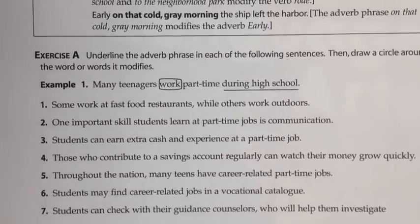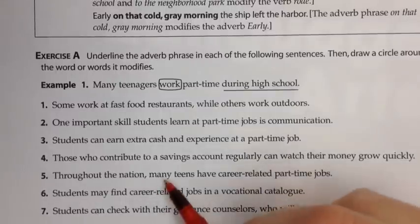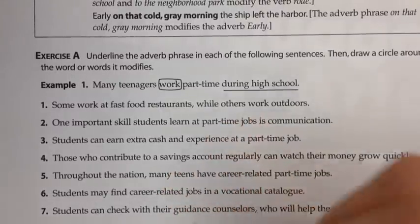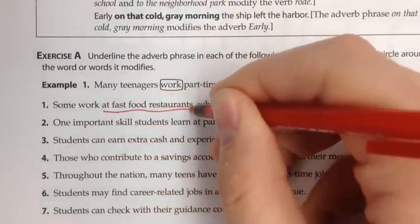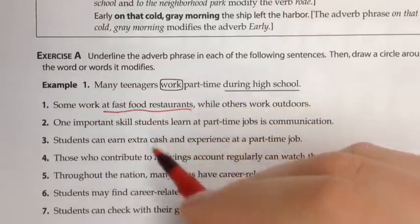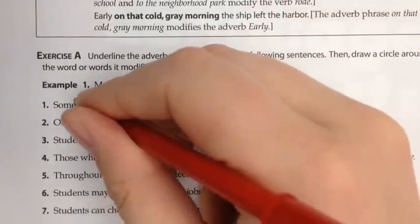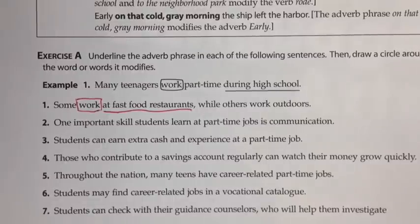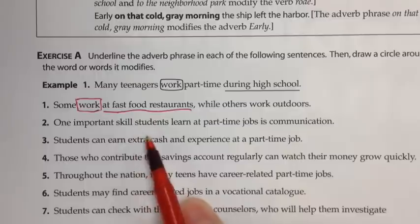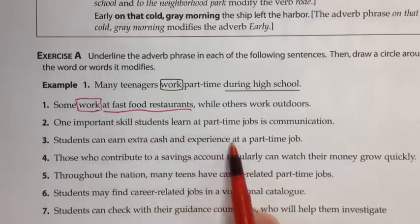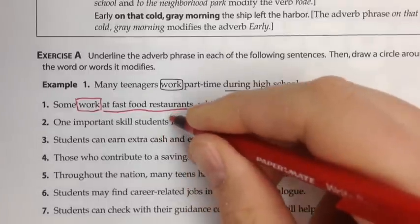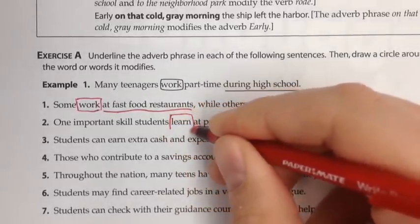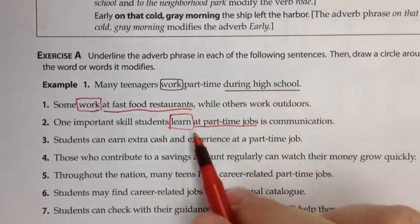Number one: some work at fast food restaurants, while others work outdoors. 'At' is a preposition, and 'at fast food restaurants' is a prepositional phrase including the preposition and its object. These describe the word 'work,' which is a verb, and tell us where they work — answering an adverbial question. Number two: one important skill students learn at part-time jobs. 'At' is a preposition, 'part-time jobs' is the object, and they describe the verb 'learn,' telling us where they learn.